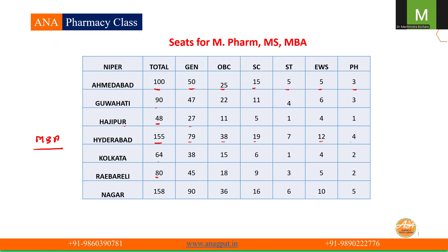At Raipur, 80 seats are there with category-wise distribution. And at SAS Nagar, MBA is also available — so here also you will get more seats. In both Hyderabad and SAS Nagar, 50 seats are for MBA and 50 other seats are also there at SAS Nagar. So these are the total seat distributions for MFARM, MS, and MBA. MBA is available only at Hyderabad and SAS Nagar.